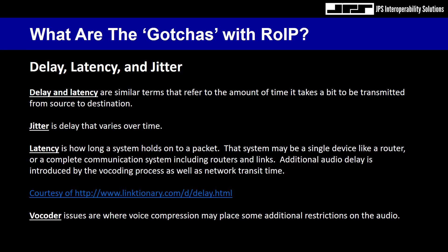What are the gotchas with ROIP? Delay, latency, and jitter are the three big ones. Delay and latency are similar terms referring to the amount of time it takes a bit to be transmitted from source to destination. Jitter is delay that varies over time. Latency is how long a system — whether a single router or a complete communication system — holds onto a packet. Additional audio delay is introduced by the vocoding process as well as network transit time, and voice compression may place some additional restrictions on the audio.